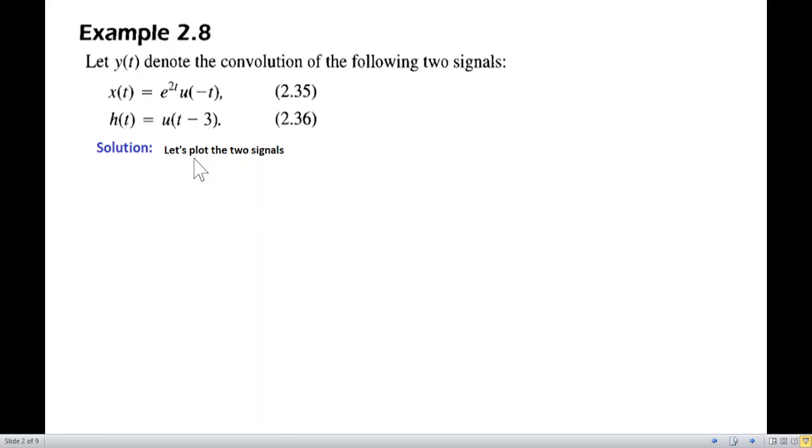First of all, let's plot these two signals. And if there is a u minus t, so let's recall that u minus t means the signal has value 1 on the left of 0 toward the negative side and it has the value 0 toward the right hand side of 0.